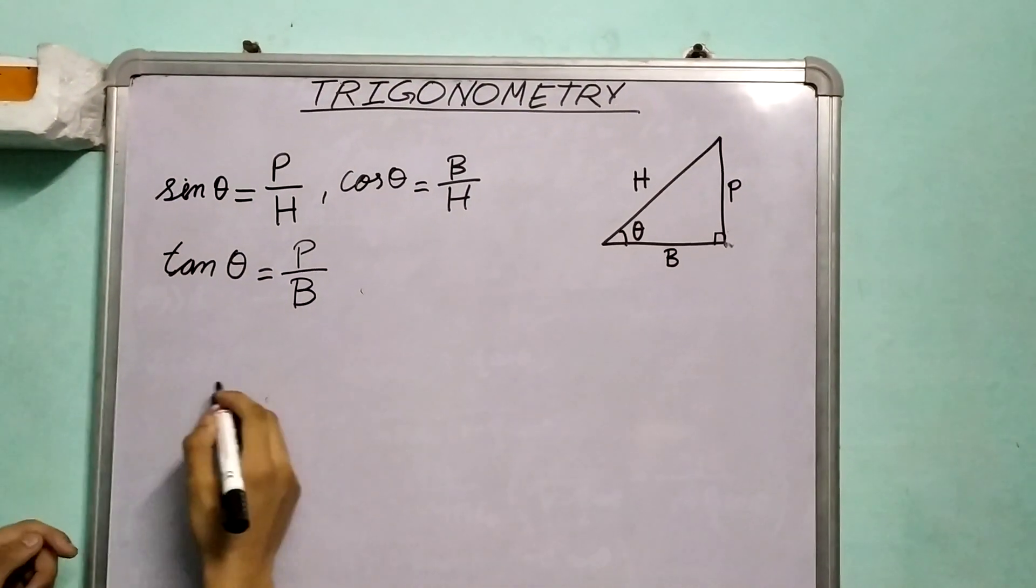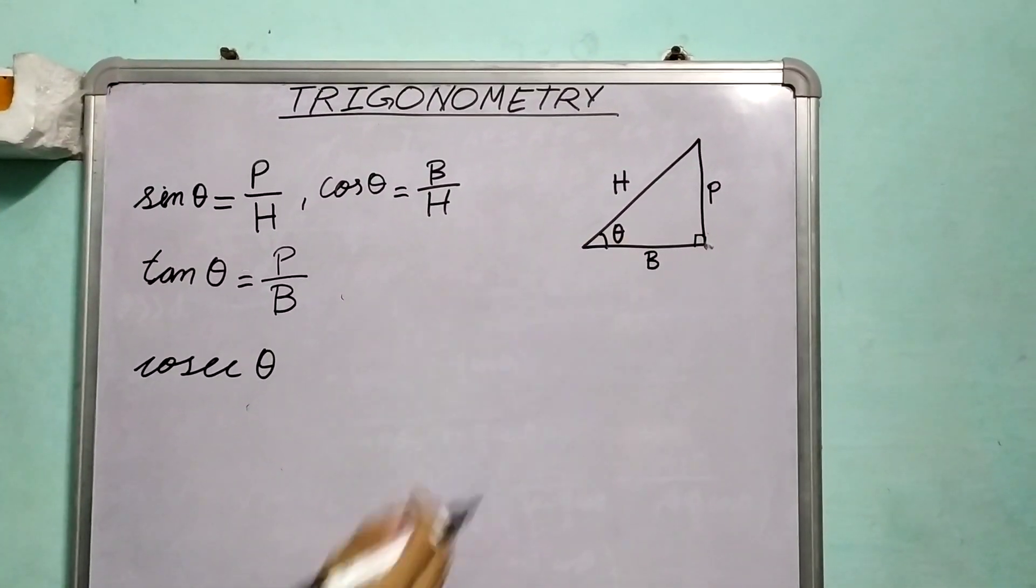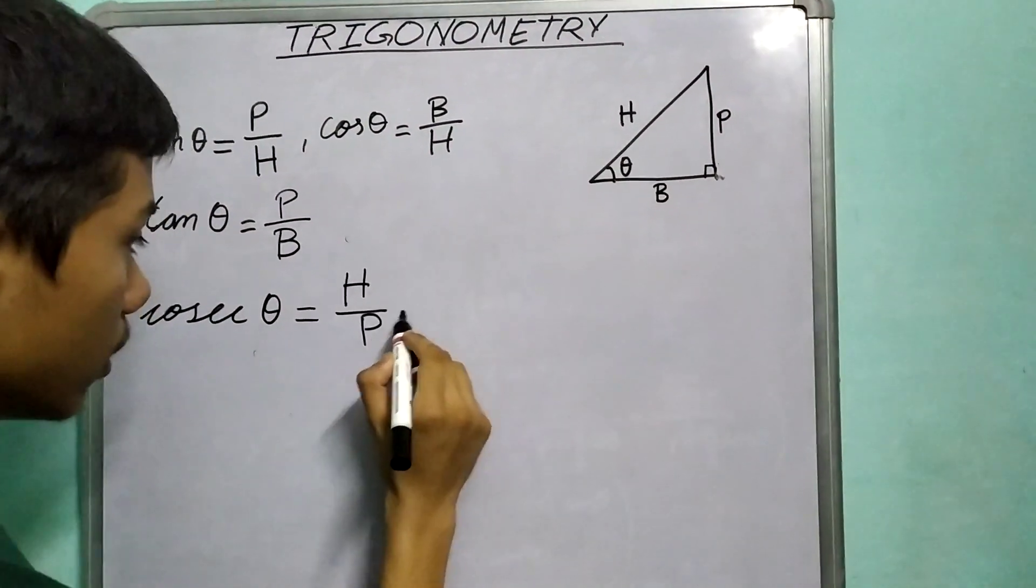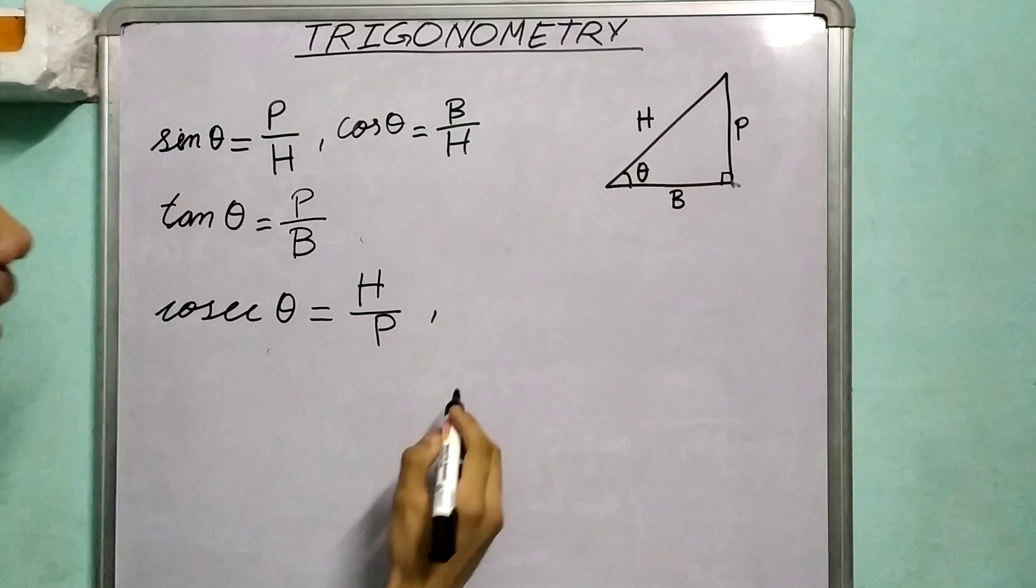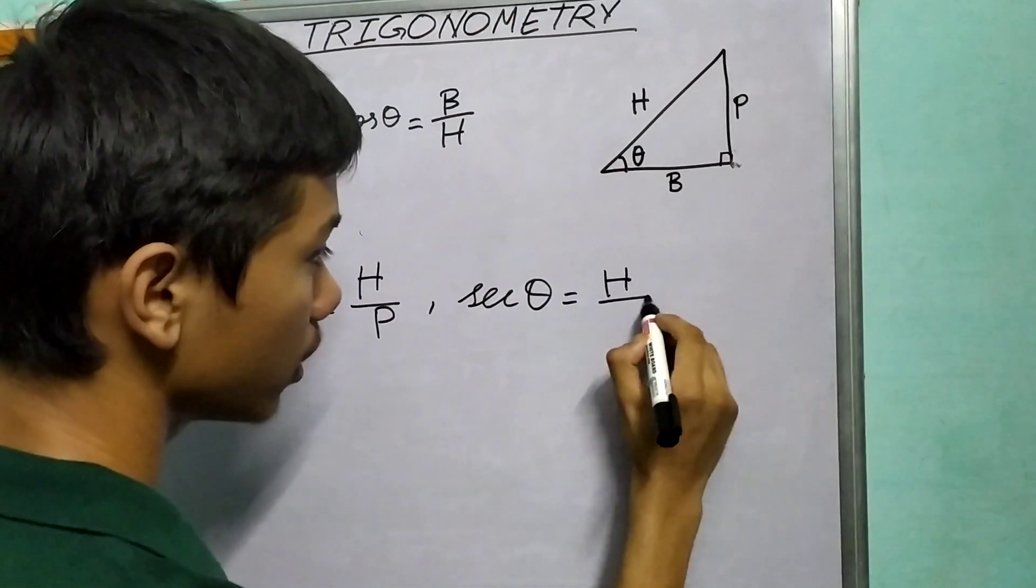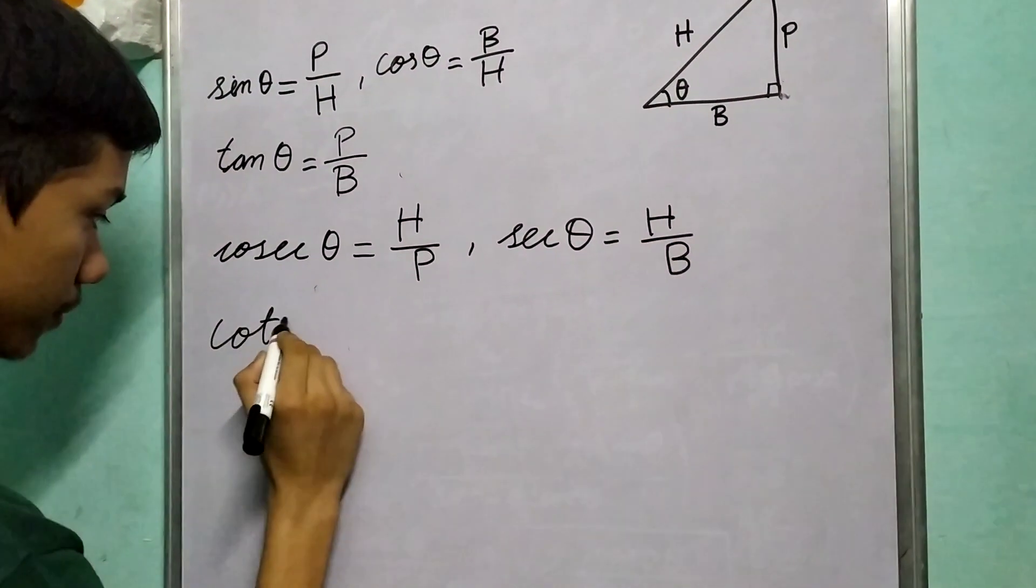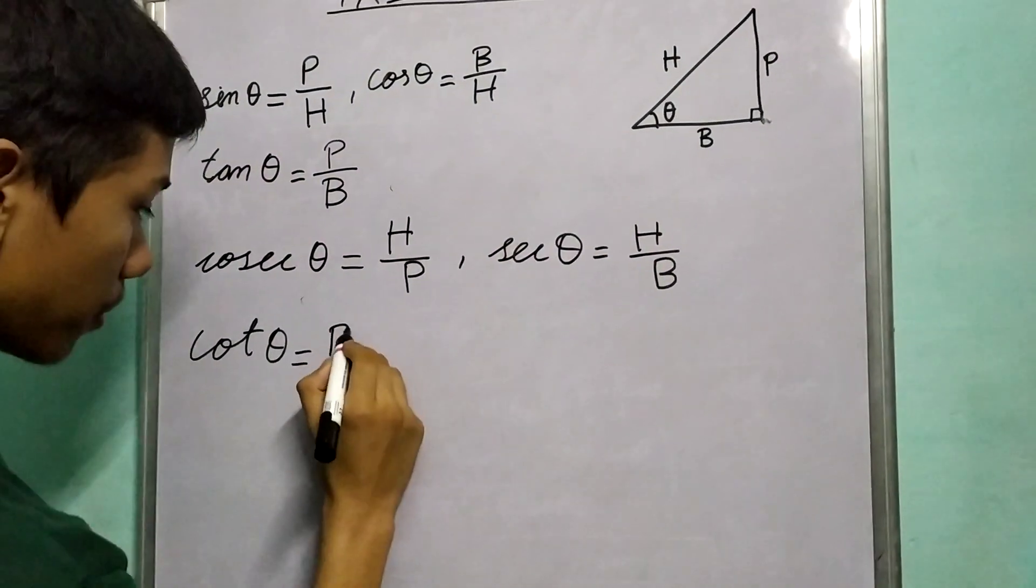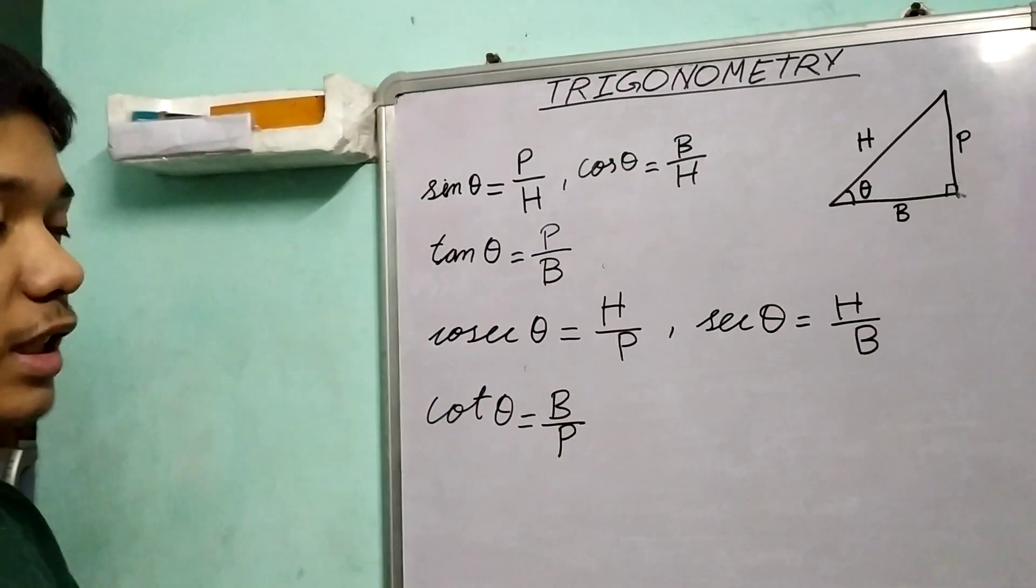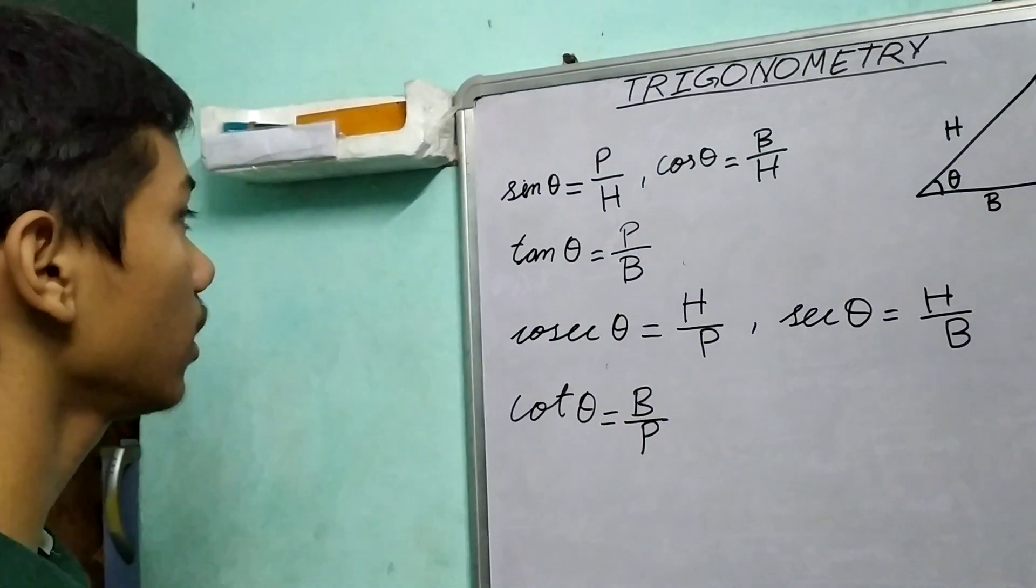And what we are left with? Cosec theta is hypotenuse over perpendicular, H upon P. Sec theta is H upon B, and cot theta is B upon P. So now we need to study what are the relationships between these trigonometric ratios.